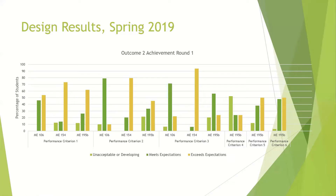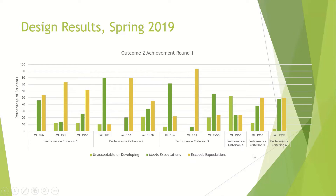Once you get results from rubrics like this, you have to think about how you're going to display them. This is just one way. We used three different classes. Performance criteria four — the one related to the bill of materials — is worth mentioning because you can clearly see students are having trouble. Over half of the students did not do a good job with that particular bill of materials. For the second round, we were able to see that's an area we need to focus on to improve, and we've implemented some improvements based on that. This way you can clearly see how students are doing on each aspect of the design process, since the evaluation is done with separate performance criteria.